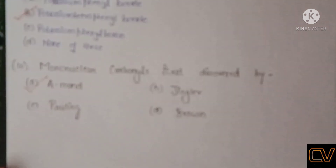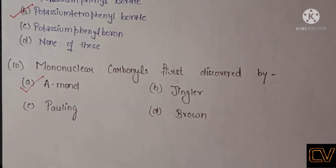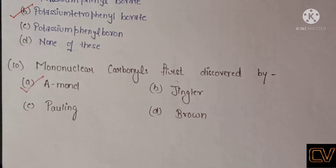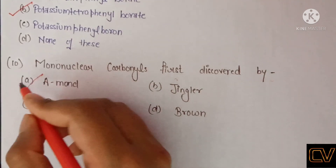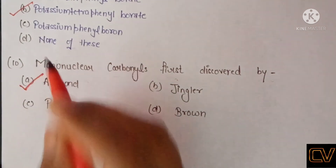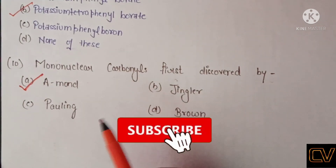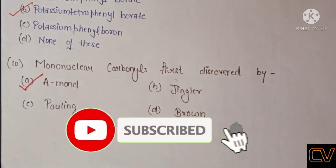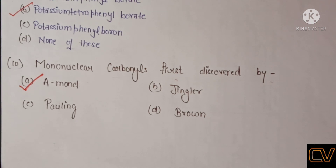Question number 10 asks who first discovered mononuclear carbonyls. The correct option is Bond. Thank you friends, we will meet in our next video. Till then, bye.